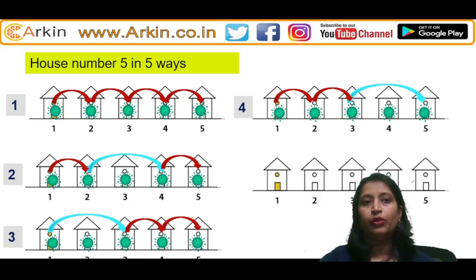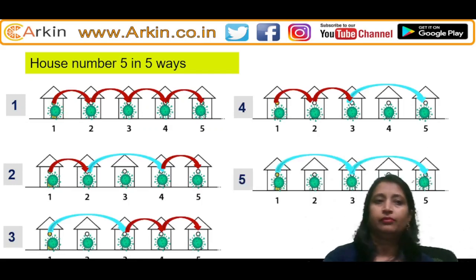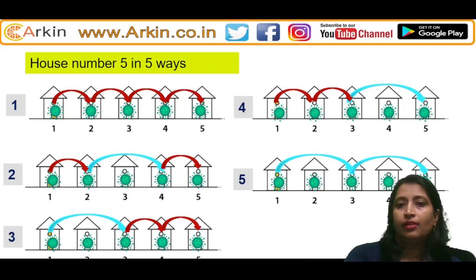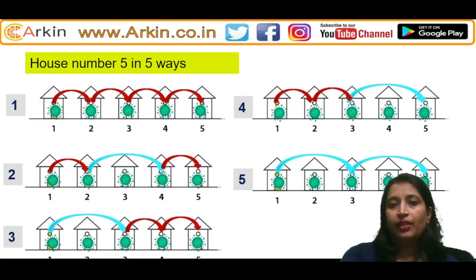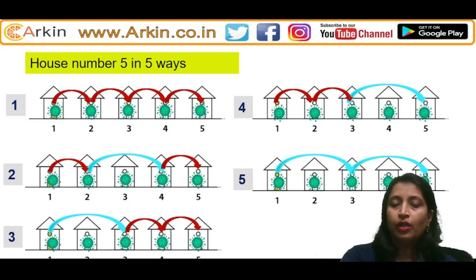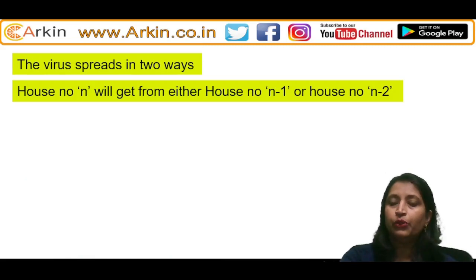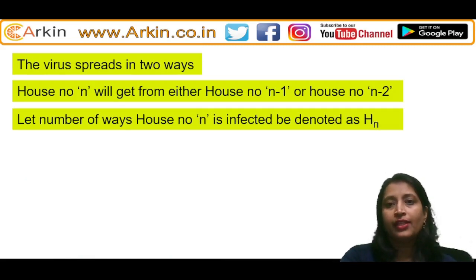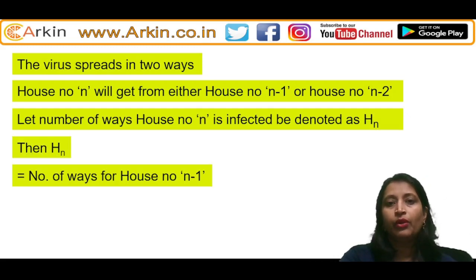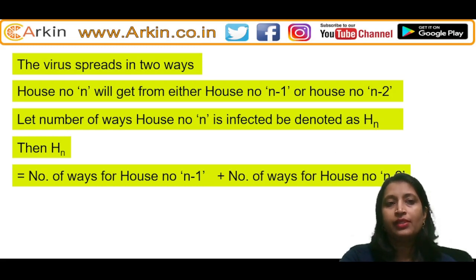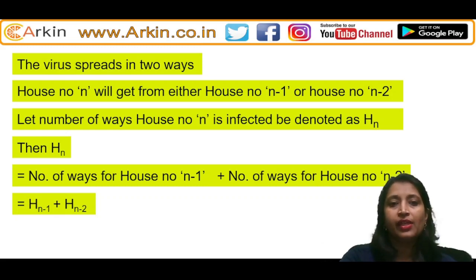You can see that any house at any particular time gets infection either from the house just before it or from the house two before it. So house number n gets infected from either house n-1 or house n-2. Let the number of ways house n is infected be denoted as h(n). So h(n) = h(n-1) + h(n-2).